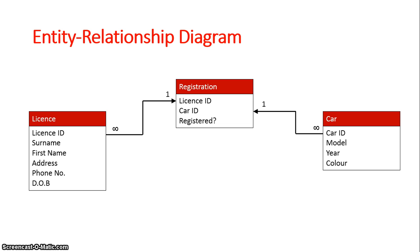We just need to understand that an entity relationship diagram outlines the entities — being what the databases are about — the attributes, which are the different fields within those databases, and the relationships: one-to-one, one-to-many, and many-to-many.